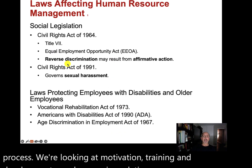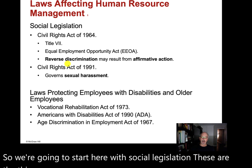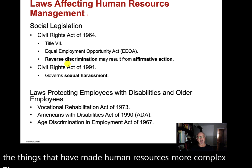We're going to start with social legislation — these are the things that have made human resources more complex. The Civil Rights Act of 1964 included Title VII and the Equal Employment Opportunity Act.